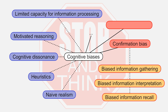Information that confirms prior assumptions is recalled more easily than disconfirming information. There exists a bias closely related to confirmation bias called disconfirmation bias. It causes people to approach information that disconfirms their prior assumptions more critically than information that confirms them. For example, if statistics confirm what we think, there is no need to criticize it; but when it disconfirms what we think, it must have been done badly by an institution that is not objective and not trustworthy.